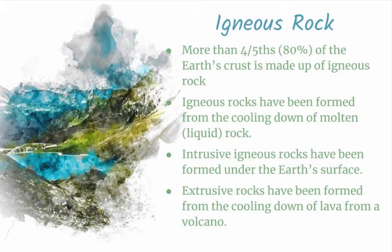Our next type of rock is igneous rock. More than four-fifths of the earth's crust is actually made up of igneous rock. The word igneous means fire, so these rocks were formed by the cooling down of molten rock either within the earth's crust or after it poured onto the earth's surface through a volcano. There are two types: intrusive rock, formed beneath the earth's surface, which has really large crystals because the crystals have more time to grow; and extrusive rock, formed at the surface.